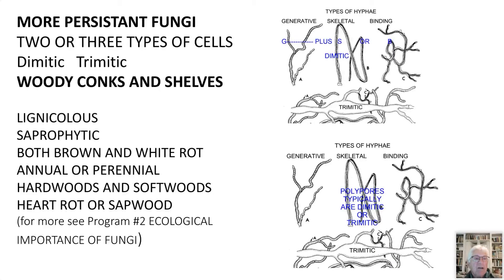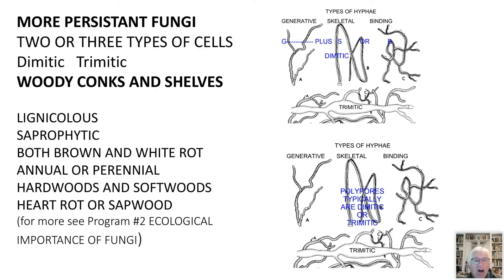Maybe I'll just stop here and see if anyone has any questions about any of that. The chat is pretty quiet so far, so let's continue. We just looked at the fleshy fungi, which are comprised of just generative hyphae. There are two other kinds: skeletal hyphae and binding hyphae. If you have the generative plus one of the others, it's called dimitic; if you have all three, it's called trimitic. Most of the persistent fungi are going to be dimitic or trimitic — and these are often the woody conchs and shelves that we find out there.